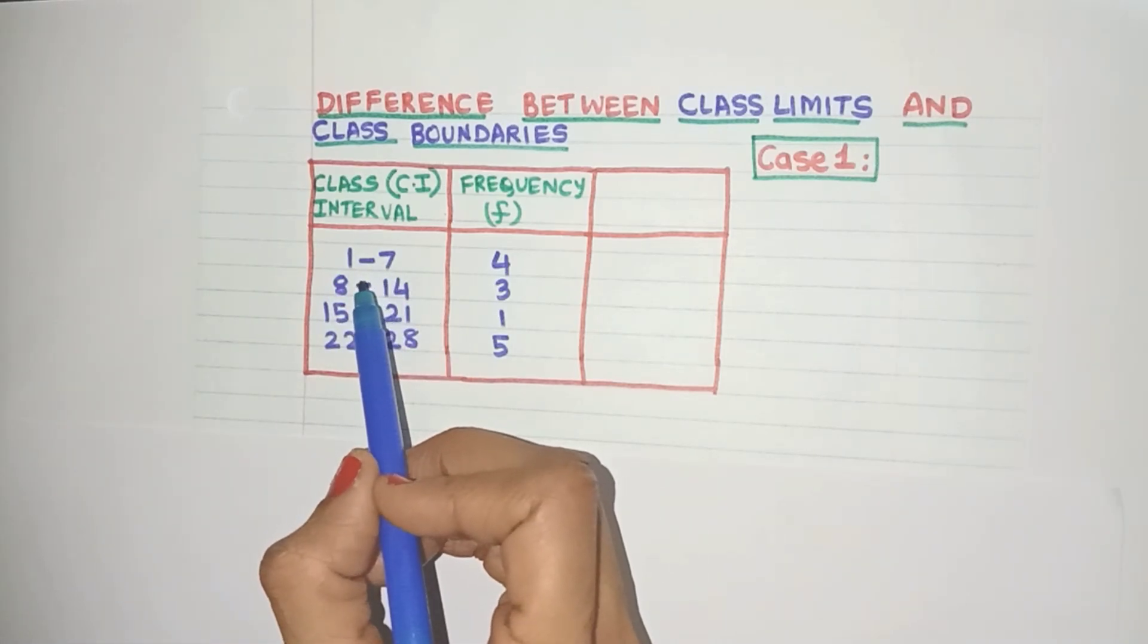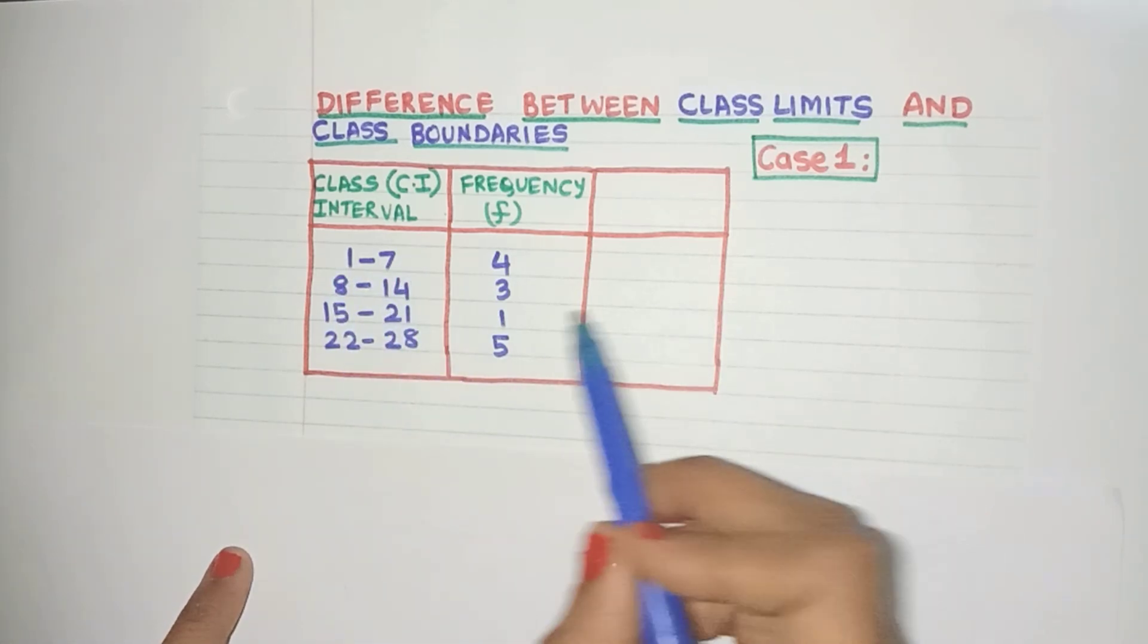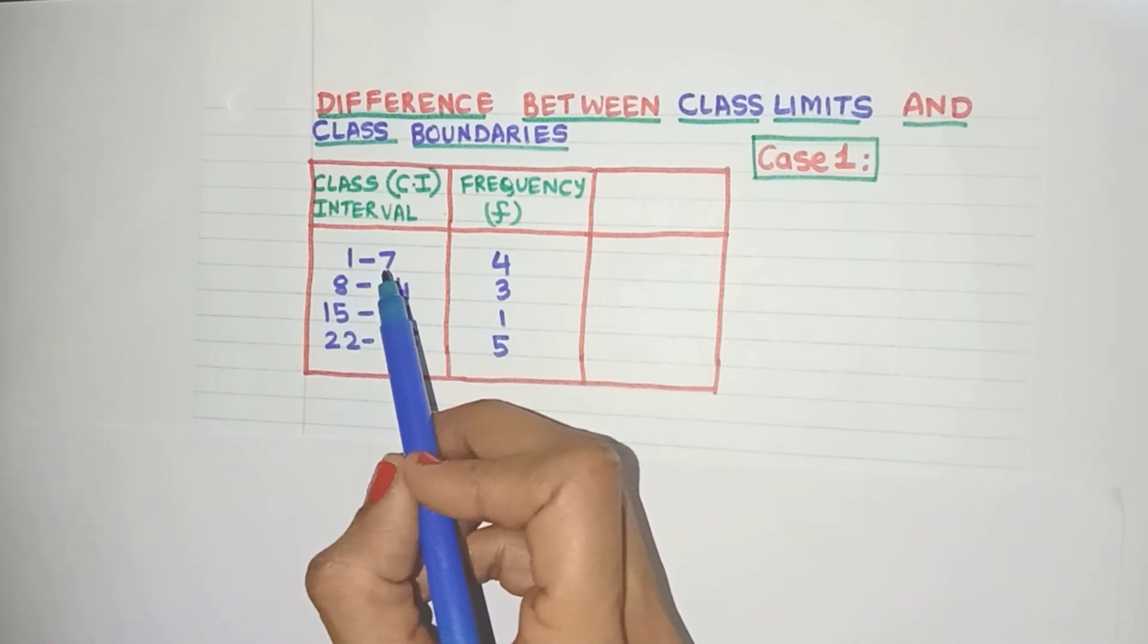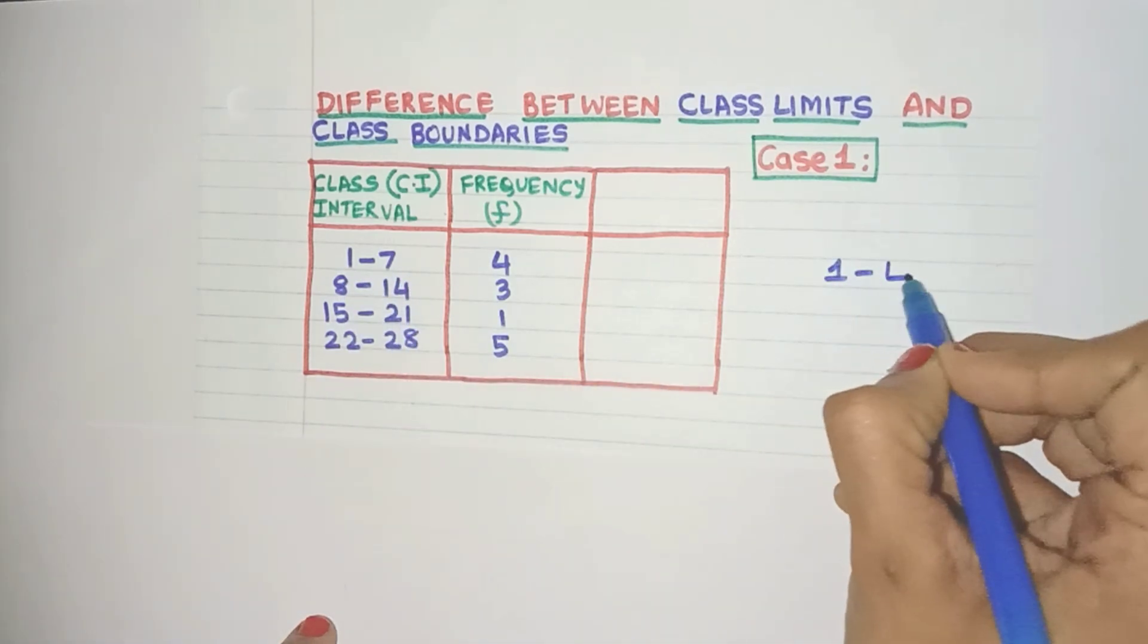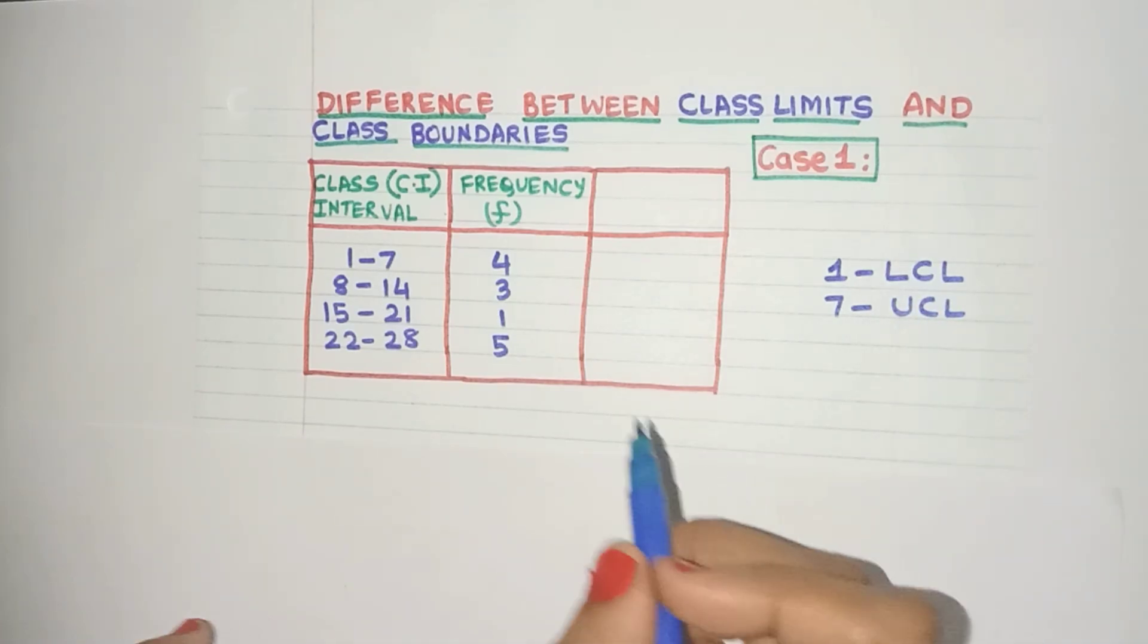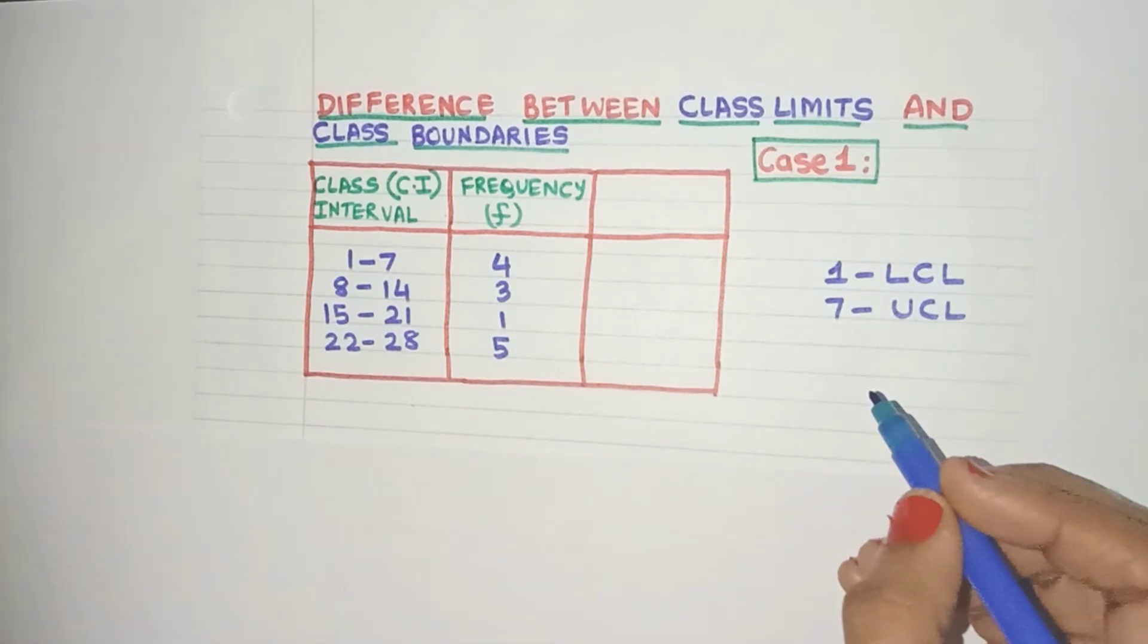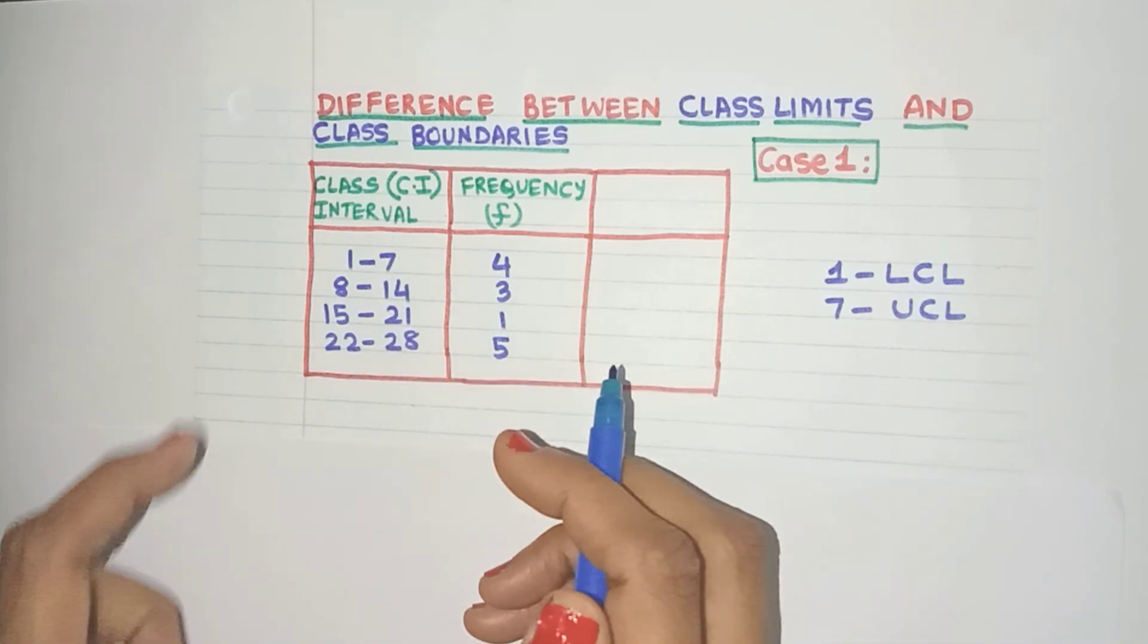Now class interval 1 to 7 means all data values from 1 to 7 including 1 and 7. So 1 is the minimum value of data in the class interval and 7 is the maximum value of data in the class interval. So we'll say 1 as the lower class limit and 7 as the upper class limit. Now because 7 is also included in that class interval, these intervals are also known as inclusive class intervals because the upper class limit is included in that class interval.